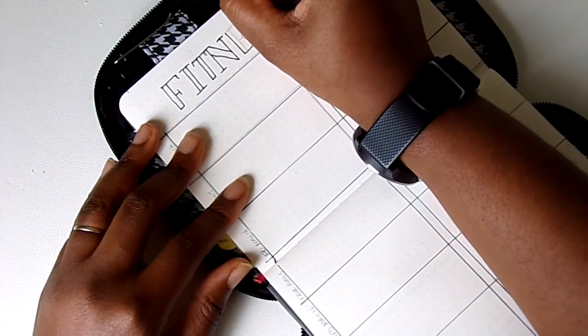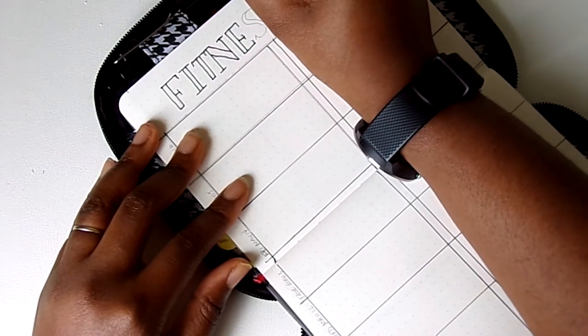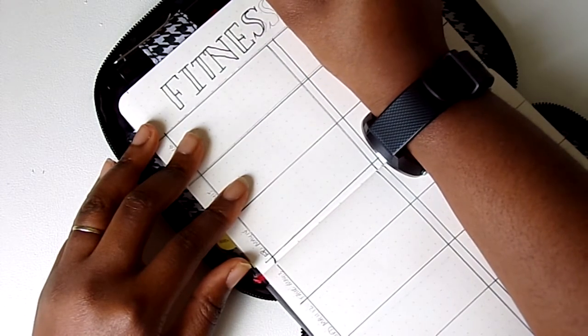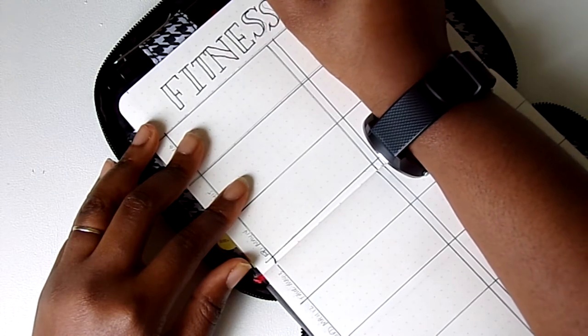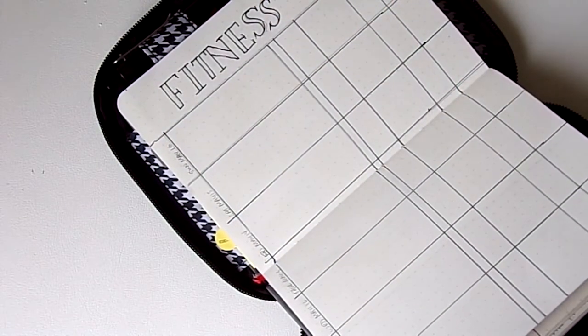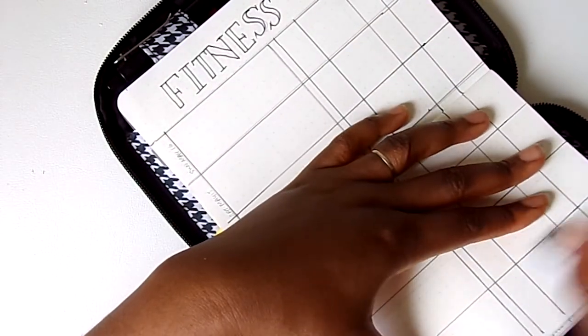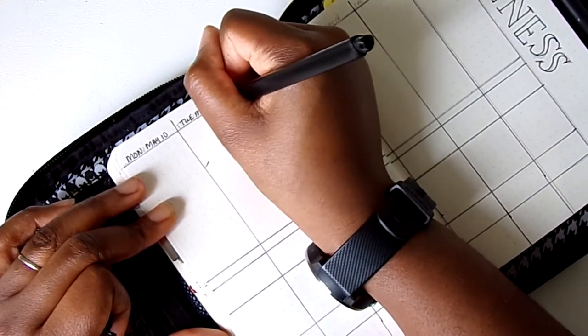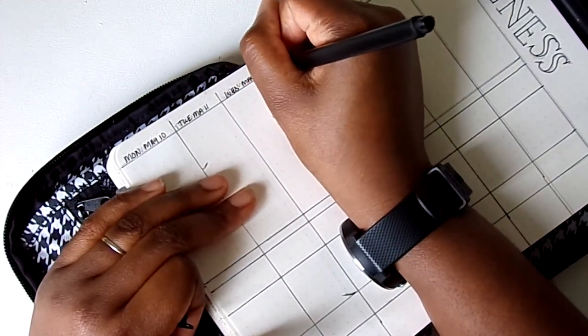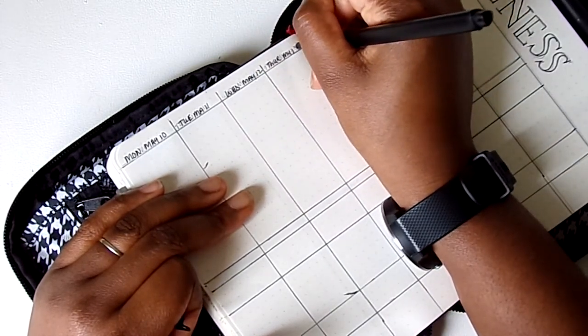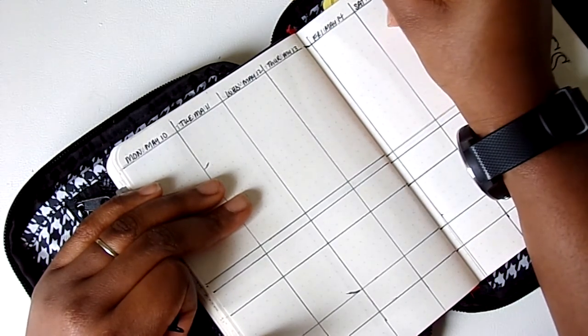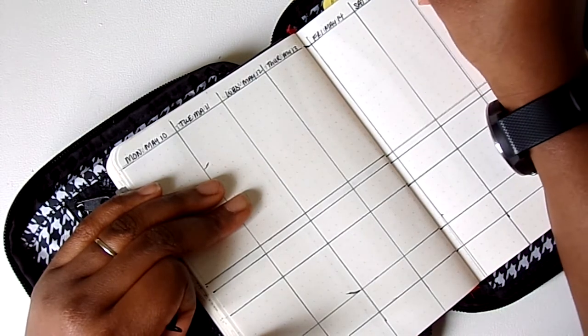So I am still writing out fitness and my fitness spread. And by the by, my fitness spread works really well. I don't plan to change it, but I am getting kind of restless with having to do all those lines. Like that's what put me off from bullet journaling in the beginning, like having to do the calendar, like all those squares and stuff.